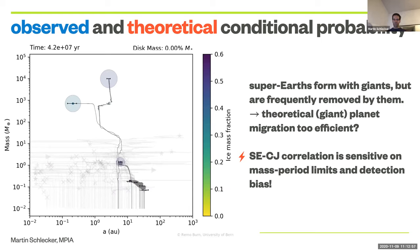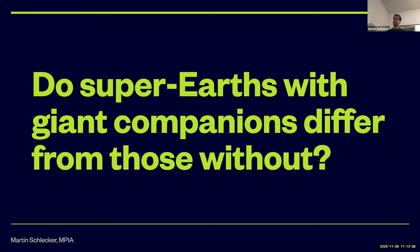We have established that super-Earths and cold Jupiters tend to form together, and that this does not necessarily imply a common occurrence in the final systems. But we wanted to go one step further and ask: do super-Earths with giant companions differ from those without? To answer this question, I will divide our synthetic population into two different groups of systems — those that have both planet types, super-Earth and cold Jupiters, and those that have only a warm super-Earth but no cold Jupiter.